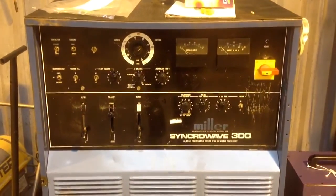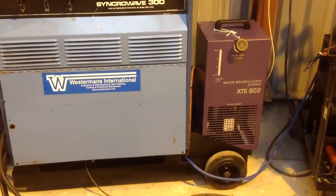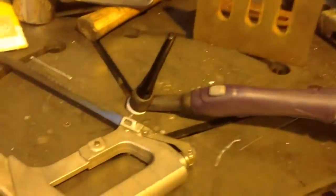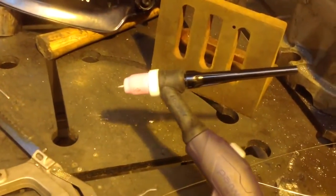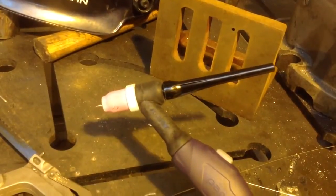Miller Syncro Wave 300 with a water cooler and new torch, new 8 meter water-cooled torch. It's a WP whatever the equivalent of 17 is water-cooled. It's an 18 I think.